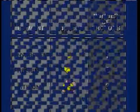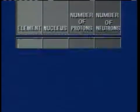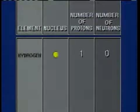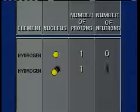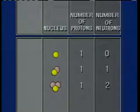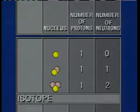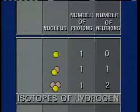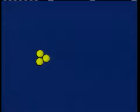They also discovered that the number of neutrons present in the nucleus could vary for atoms of a specific element. These different forms of an element were called isotopes. The element hydrogen has three known isotopes.